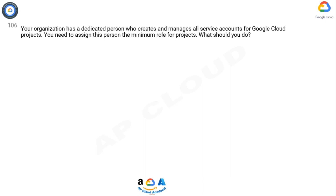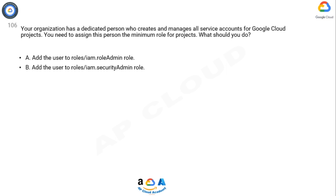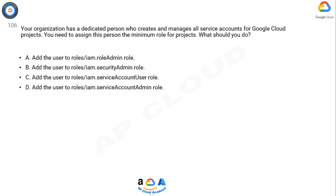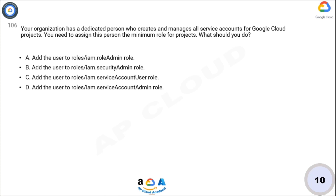Question 106: Your organization has a dedicated person who creates and manages all service accounts for Google Cloud projects. You need to assign this person the minimum role for projects. What should you do? A: Add the user to roles/iam.roleAdmin. B: Add the user to roles/iam.securityAdmin. C: Add the user to roles/iam.serviceAccountUser. D: Add the user to roles/iam.serviceAccountAdmin. Now take 10 seconds to think about the answer.